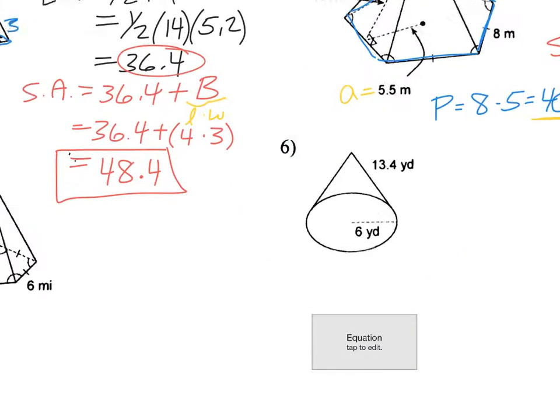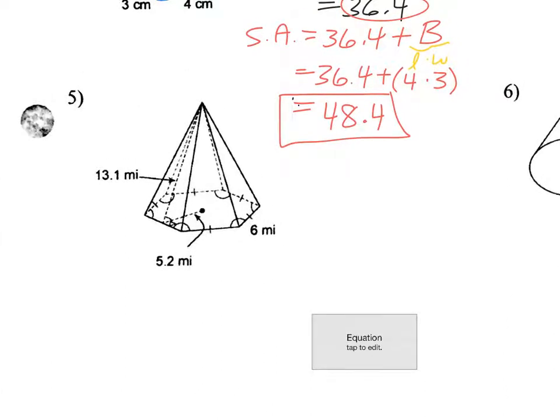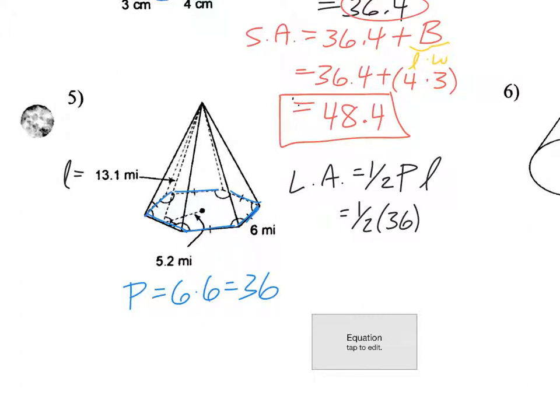All right. Next one. So very similar to the previous one. Lateral area is 1/2 PL. Okay. Perimeter. So again, this is a 6. There's 2, 3, 4, 5, 6 sides. So perimeter is 6 times 6, which would be 36. And right here is my slant height. So 1/2, 36 times 13.1. Type all that in. 235.8.